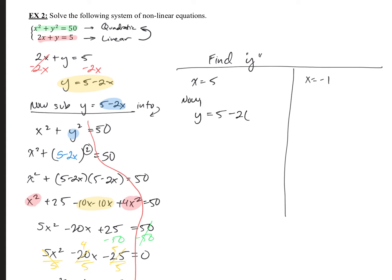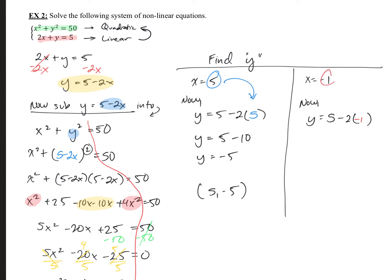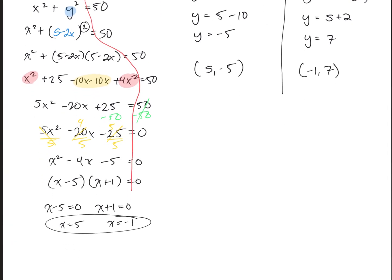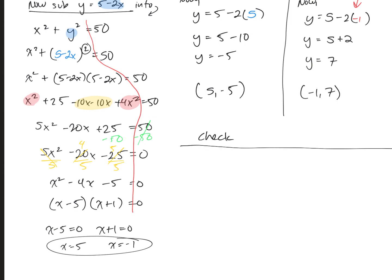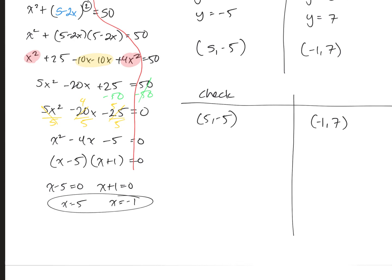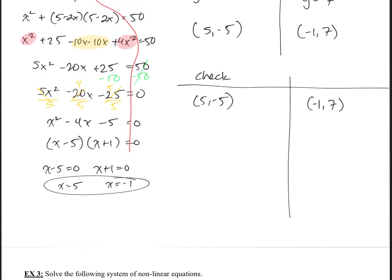For x equals 5: y equals 5 minus 2 times 5, so y equals 5 minus 10, giving y equals negative 5. That gives the point 5, negative 5. For x equals negative 1: y equals 5 minus 2 times negative 1, so y equals 5 plus 2, giving y equals 7. That gives the point negative 1, 7. But remember, we need to check these. Labeling your work is one of the best things you can do.